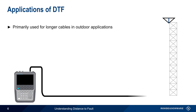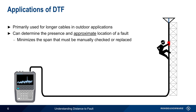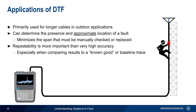Distance to fault is primarily used for longer cables, often outdoors, such as the feeder cable of a tower-mounted antenna. DTF can determine both the presence and approximate location of a fault — that is, it minimizes the section of cable that needs to be manually checked or replaced. Repeatability of the measurement is often more important than extremely high accuracy, which is difficult to achieve in practice. For example, we often want to compare a current measurement to a known good or baseline trace.